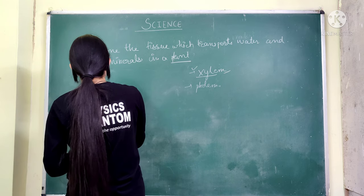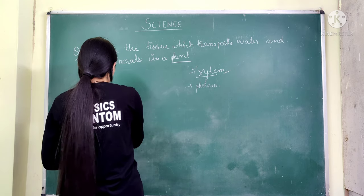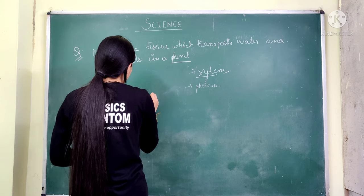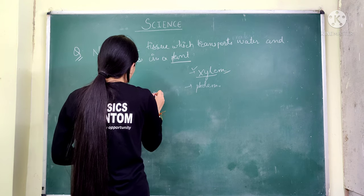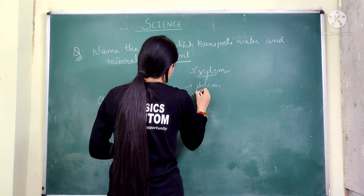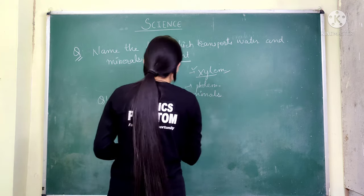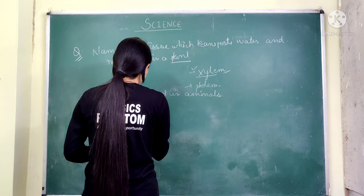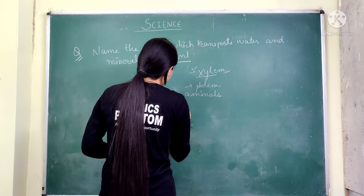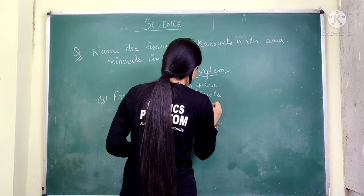Next question: what is the form of food stored in animals? The answer is glycogen and fat. Glycogen and fat are the forms of food storage in animals.